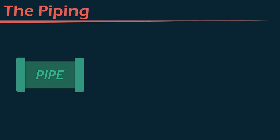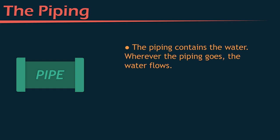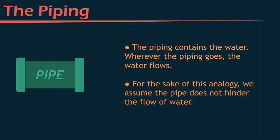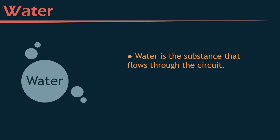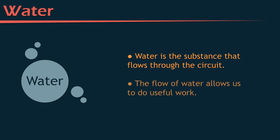Now let's talk about each part of the hydraulic circuit. The piping contains the water — wherever the piping goes, the water flows. For the sake of this analogy, we're going to assume that the pipe does not hinder the flow of water; it simply allows the flow of water but doesn't get in the way of it. Water is the substance that flows through the circuit, and the flow of water is what allows us to do useful work — from the Mesopotamians all the way up to hydroelectric dams today.